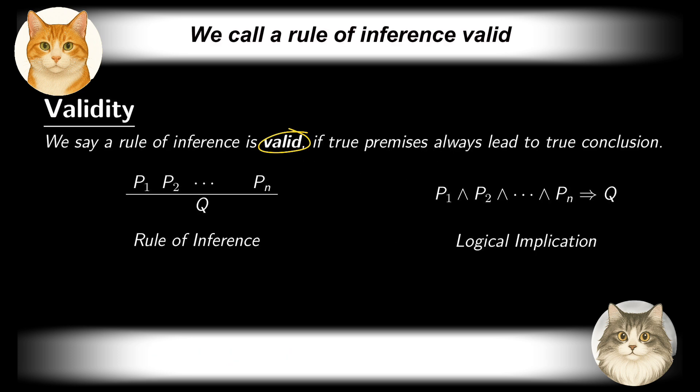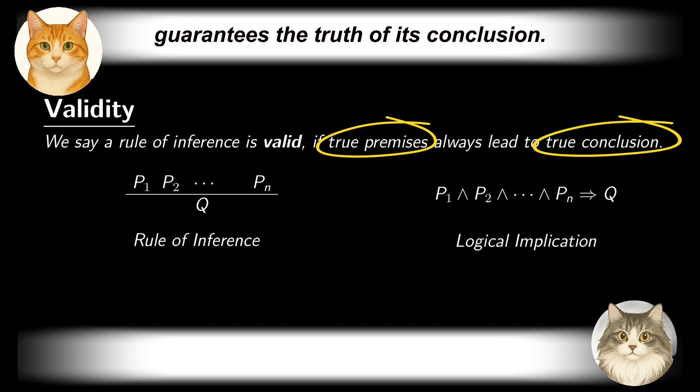This motivates the definition of validity. We call a rule of inference valid when the truth of its premises guarantees the truth of its conclusion. For example, the rule of inference from the previous example is not valid.